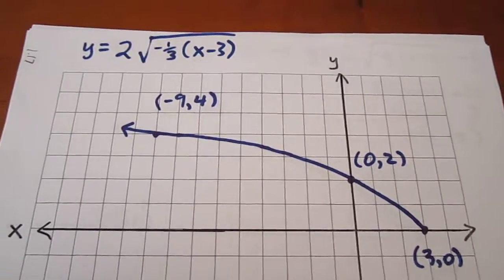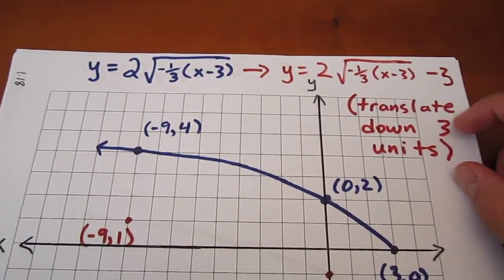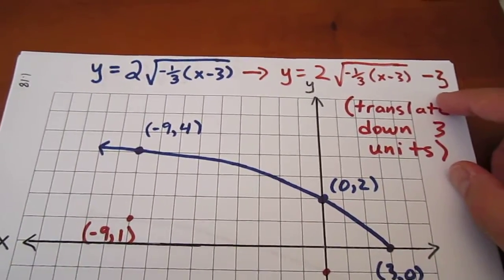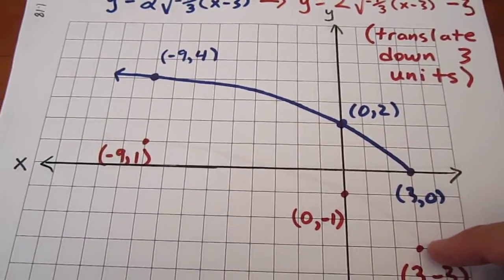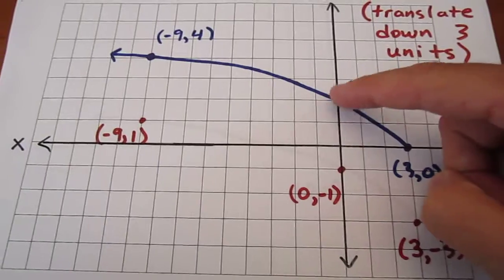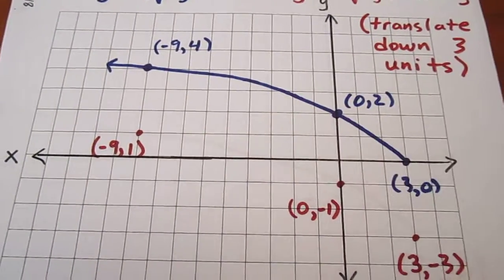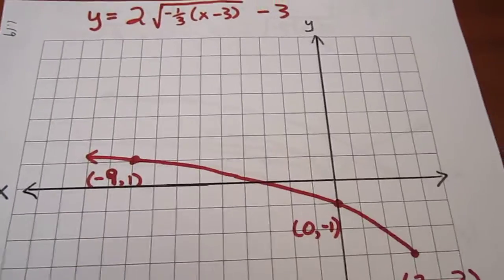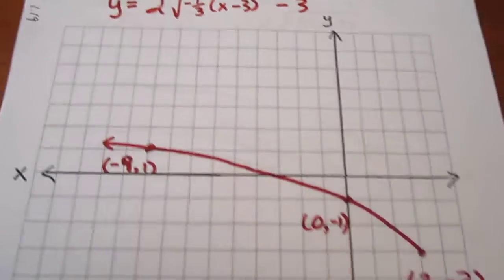Our last transformation is going to be a translation down 3 units as indicated by this negative 3 out here. So what we do is translate everything down 3 units, subtract 3 from every y-coordinate, discard the blue curve, graph the red, and that is our final graphed function.